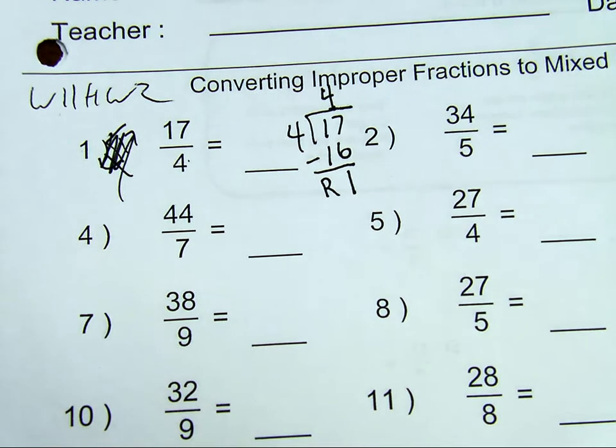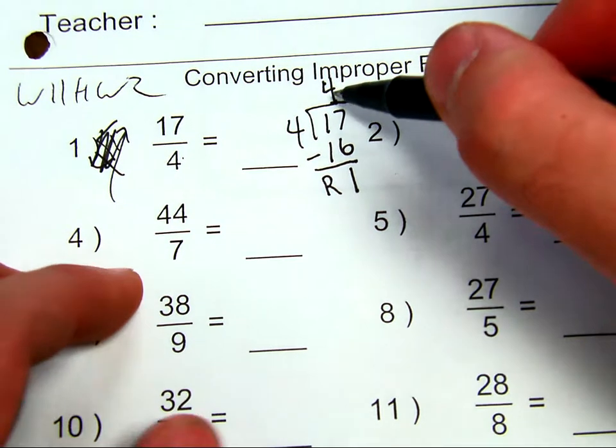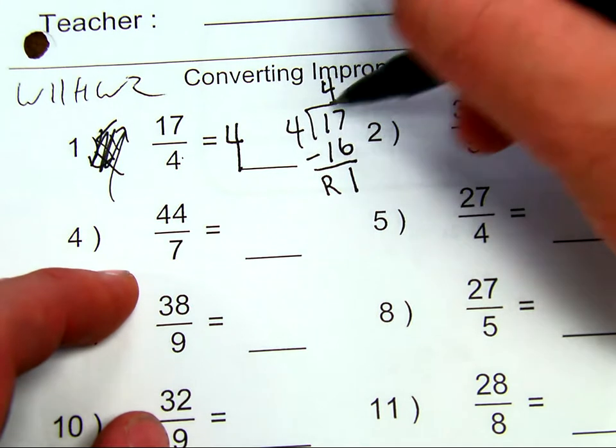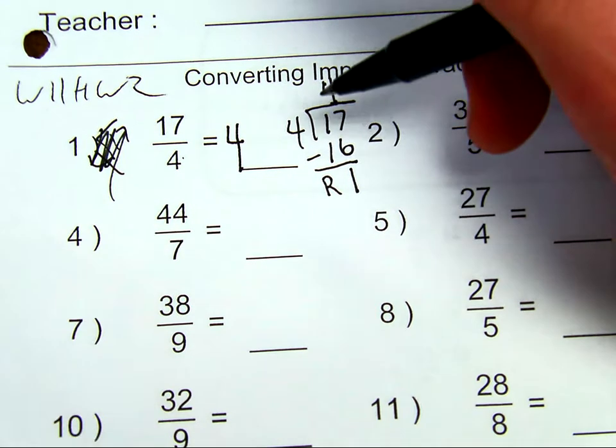So that 4, that big number, is going to go here. That's my large whole number. Everything else is going to be a little extra, my extra fraction.